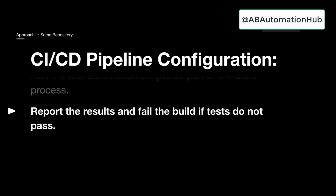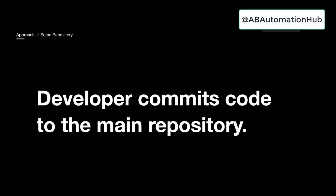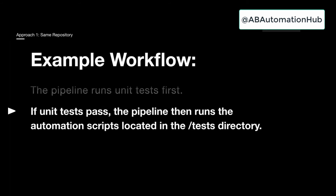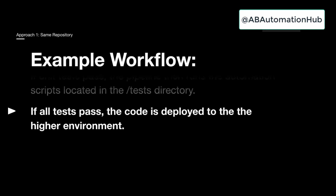You can see if test cases pass; if there's any failure, you can report the build as not stable. In the example workflow: the developer commits code into the main repository — the code is merged. The pipeline runs unit test cases first; if they pass, the pipeline runs scripts from the test directory. After test cases pass, the code is deployed to a higher environment. If you have automated end-to-end flow and all test cases pass on that environment, the code is automatically deployed to production. Otherwise, you can perform manual testing on staging before deploying to the higher environment.